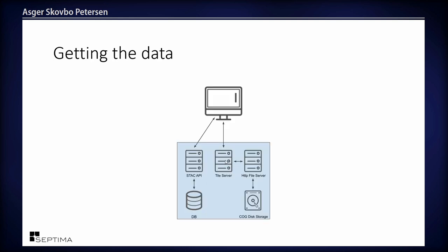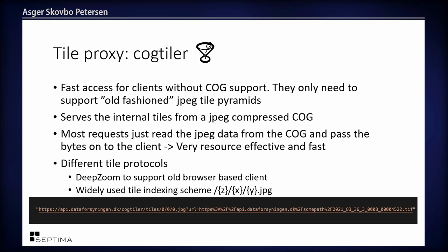That's why we also built a tile proxy — a small Python project called CogTiler — which serves the internal tiles from the Cloud-Optimized GeoTIFF. Since the images aren't georeferenced, it's just pixel space: a tiling scheme for a raster. The tiles inside the COG are JPEG-compressed, so when a client requests a tile, the proxy reads the needed bytes from the TIFF and passes them directly to the client without decoding and re-encoding — it's pretty fast and effective for most requests.